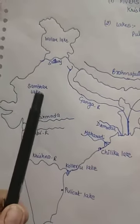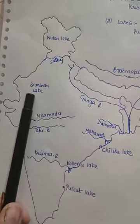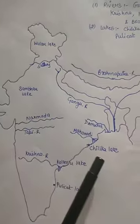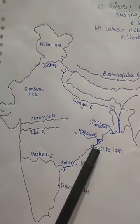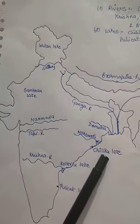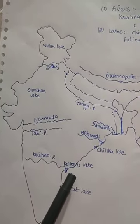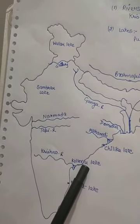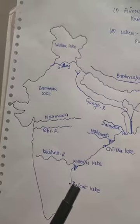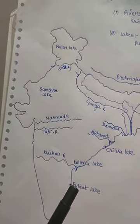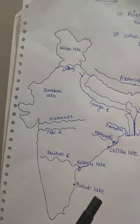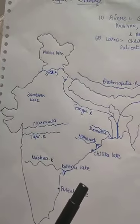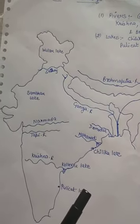Next is Sambar lake, a saltwater lake in Rajasthan. Next you can see Chilika lake on the Andhra Pradesh and Tamil Nadu border, near the Krishna river delta. Pulikat and Koleru lakes are also in Andhra Pradesh. These three lakes — Pulikat, Koleru, and Chilika — are lagoons.